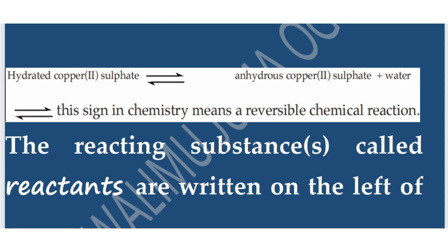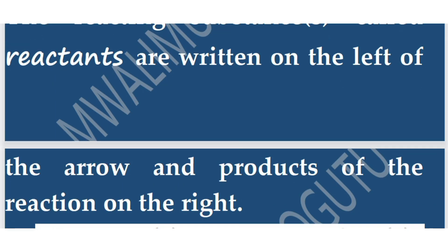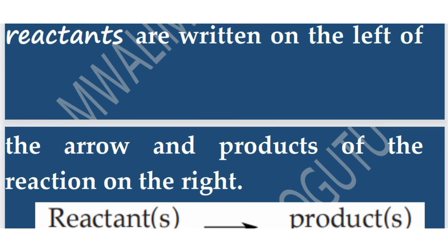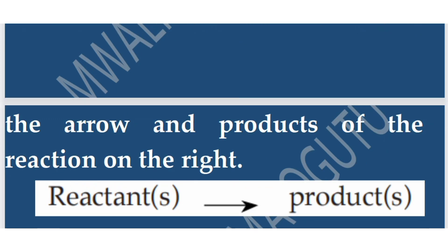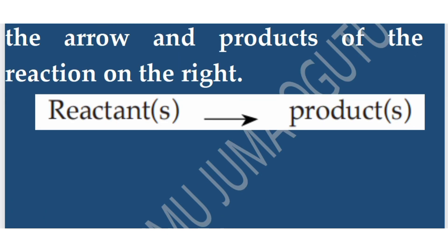The reacting substances on the left of the arrow are called reactants, and the products of the reaction are on the right of the arrow. So we have reactants → arrow → products. Thank you so much. Do not forget to subscribe, like, share, and comment.